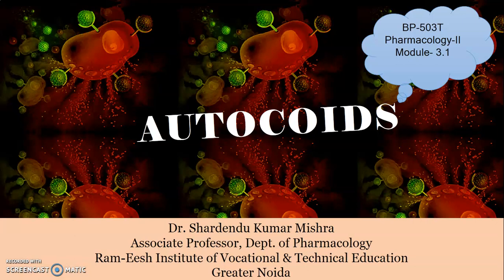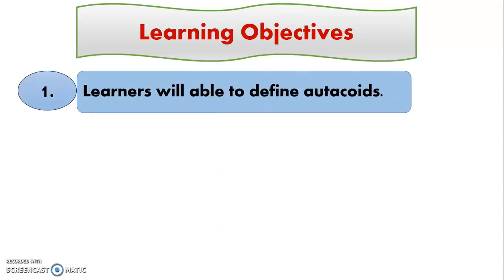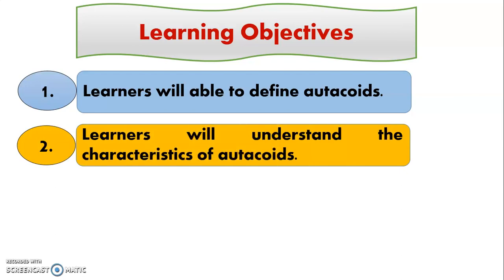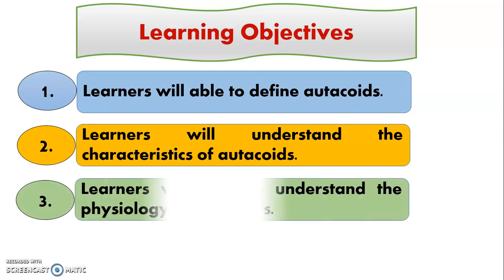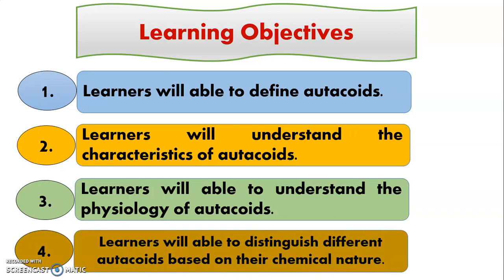Dear Learners, today we are going to discuss about Autocoids. The learning objectives of this module are: learners will be able to define autocoids, understand the characteristics and functioning of autocoids, understand the basic physiology of autocoids, and distinguish different types of autocoids based on their chemical structure.